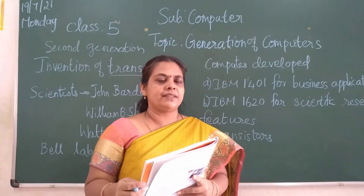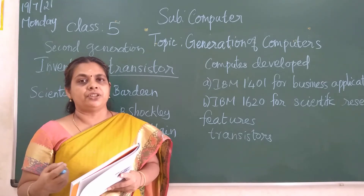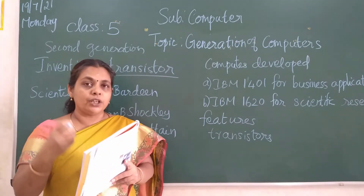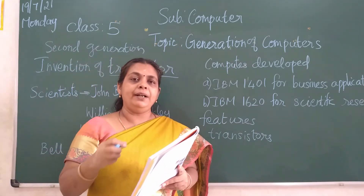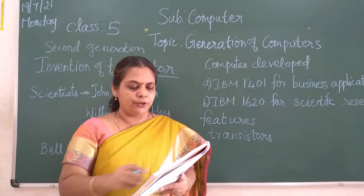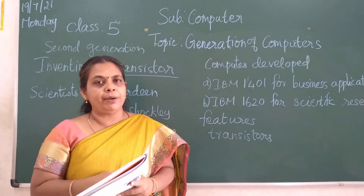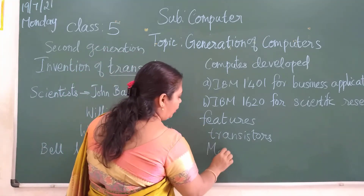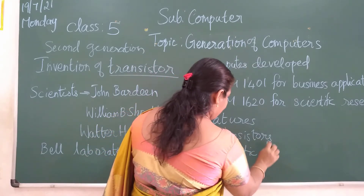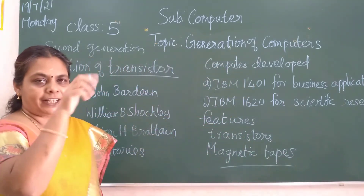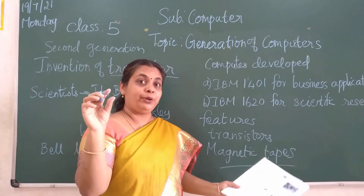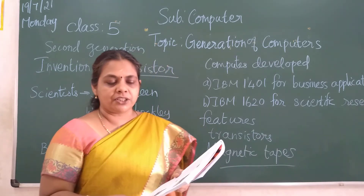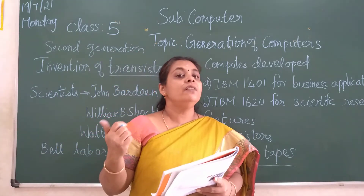The next feature is size — it was smaller than the first generation. In the first generation, vacuum tubes were very big and occupied almost an entire room, but the transistor size is very small so the computer size also got reduced. The secondary memory used was magnetic tapes, similar to a video cassette recorder. The cost was less expensive than the first generation.